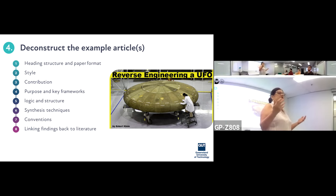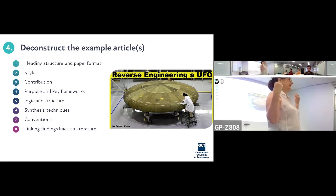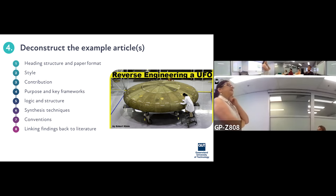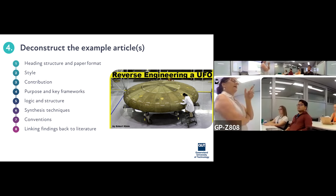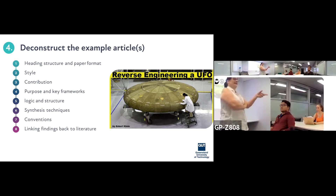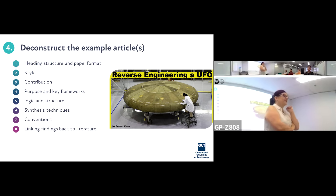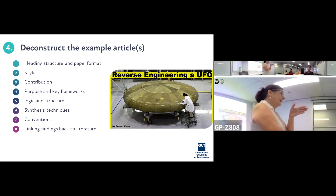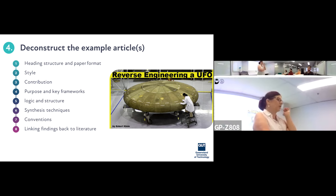Now we deconstruct the exemplar article. Reverse engineering is mainly applied to physical objects, but you can use it in the knowledge industry. The key thing about reverse engineering — whether it's a product or a UFO — is that you need a starting point. You have to have the object in hand. Once you do, you have a blueprint to work from. We're going to look at eight things when we deconstruct.